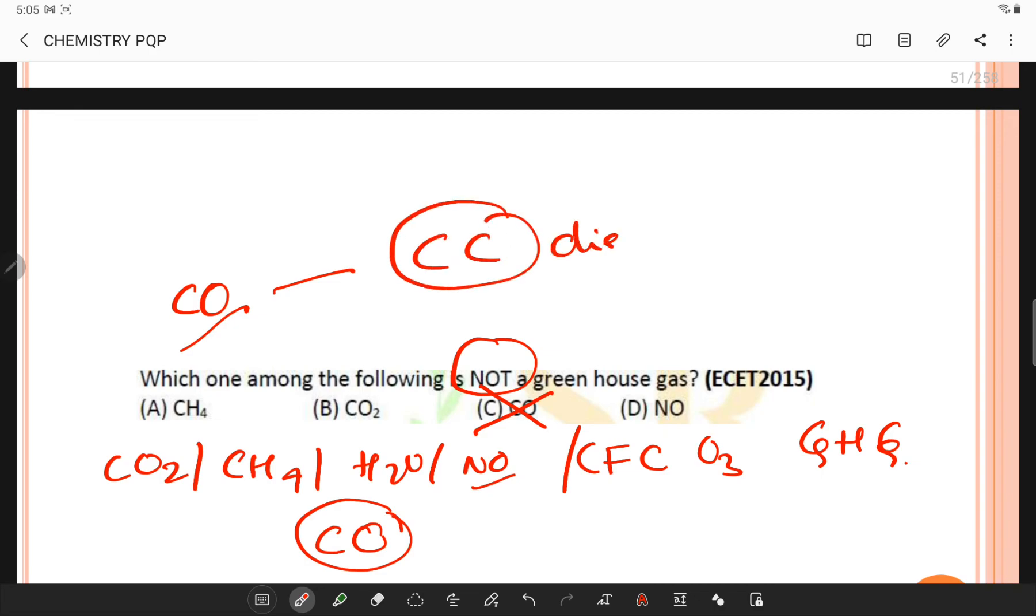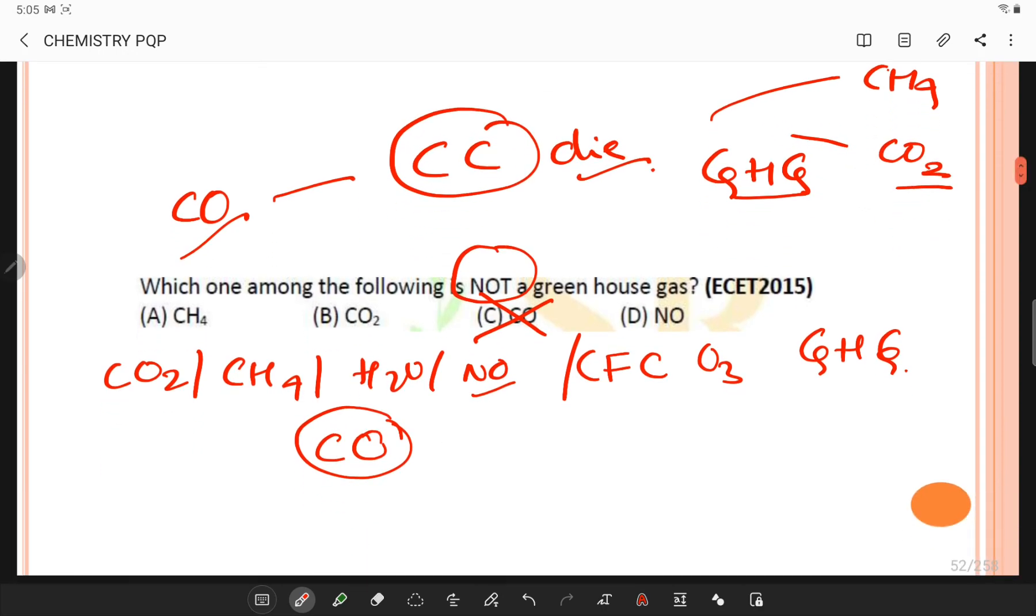Carbon monoxide does not cause climate change directly and its presence affects the abundance of greenhouse gases such as methane and carbon dioxide. Carbon monoxide also forms carbon-based fuels such as coal, oil, natural gas, and wood which are burned.